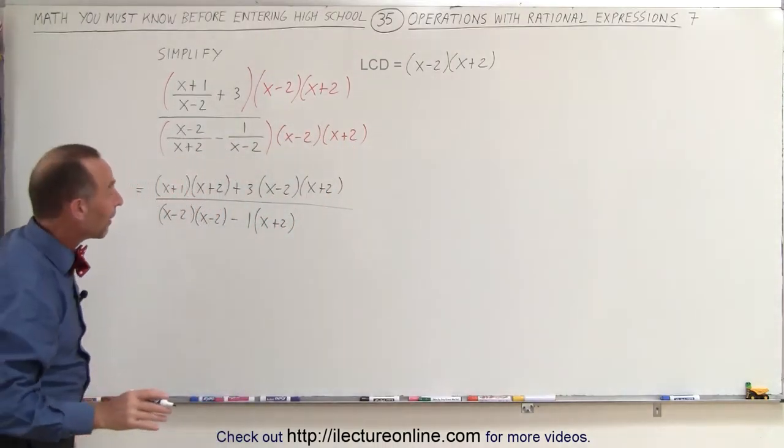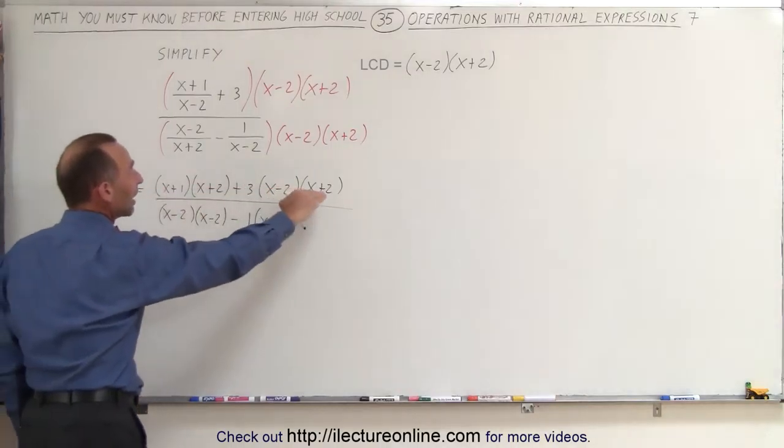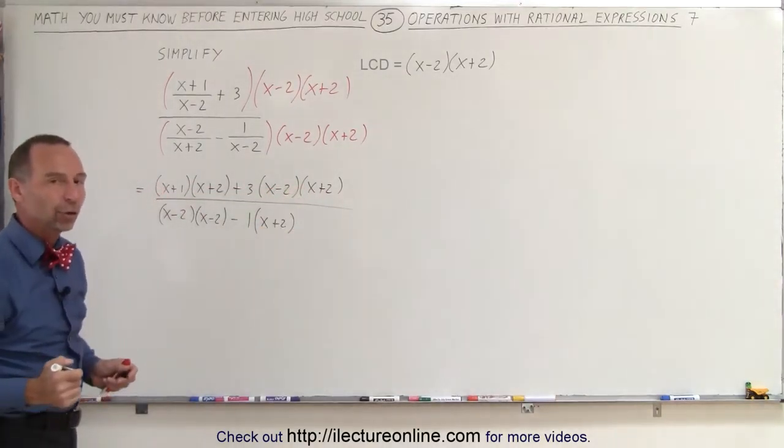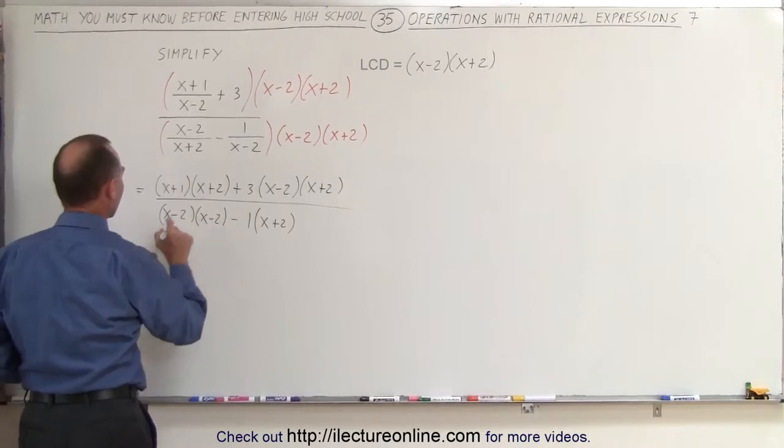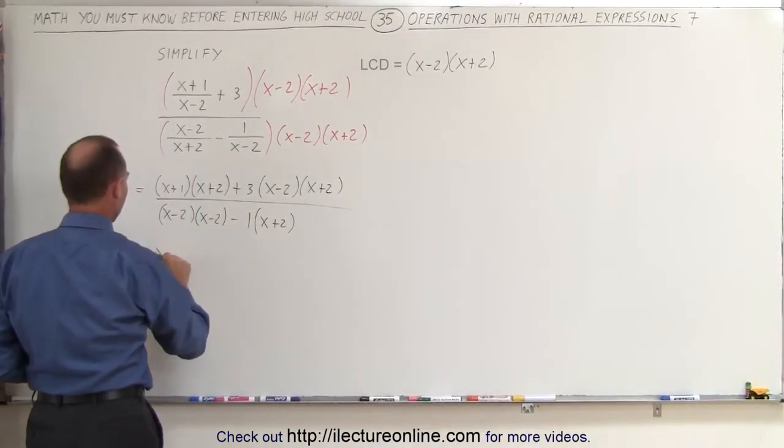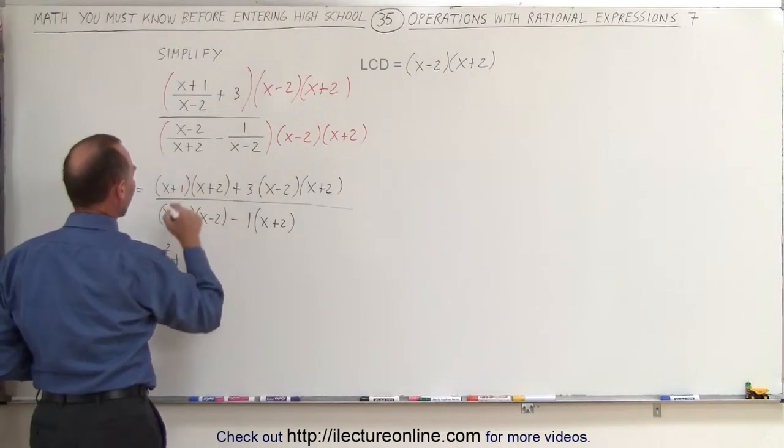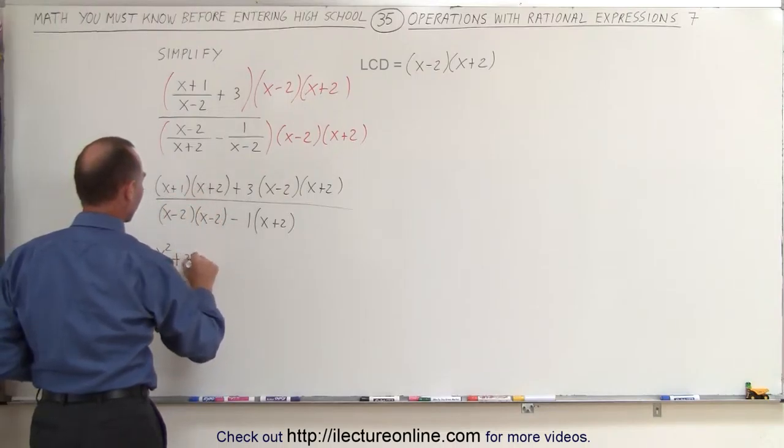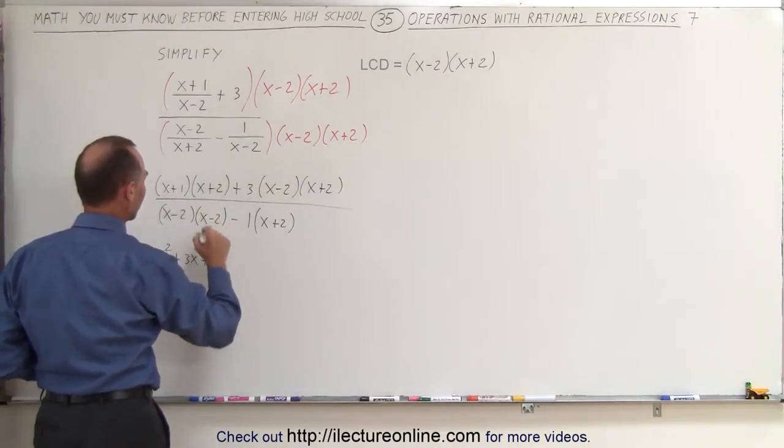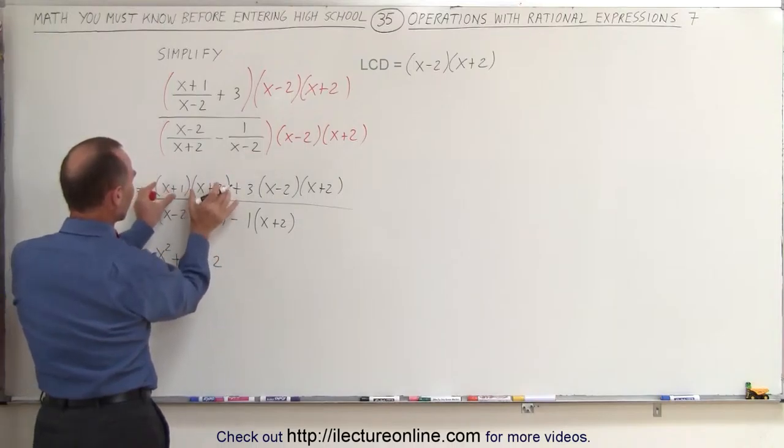Now to simplify this further, we should multiply everything out and combine like terms. So this becomes, we multiply this together, x squared plus 1x and 2x together is plus 3x plus 1 times 2, which is 2. So when I multiply those two binomials together, I get this.